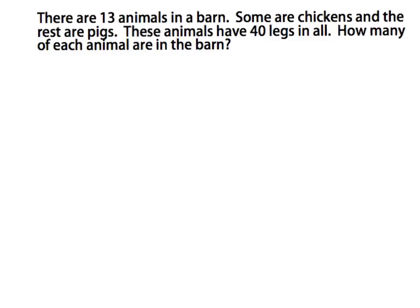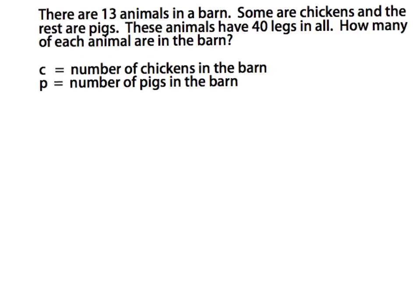Let's take a look at this second example. There are 13 animals in a barn. Some are chickens and the rest are pigs. These animals have 40 legs in all. How many of each animal are in the barn? We're trying to figure out how many chickens and how many pigs live in the barn, so we assign a variable for each. I use c for the number of chickens living in the barn and p for the number of pigs living in the barn.